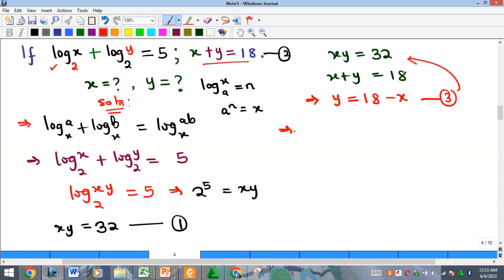If I substitute it into this equation, I'm going to get that my x times (18 minus x) is equal to 32. This immediately leads us to a quadratic equation. You're going to have 18x minus x squared equals 32.